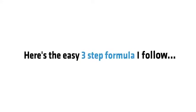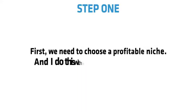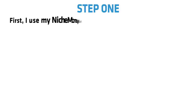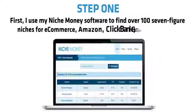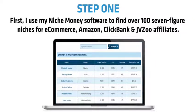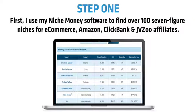Here's the easy three-step formula I follow. Step 1: we need to choose a profitable niche, and I do this with two free traffic softwares. I use my Niche Money software to find over 10 seven-figure niches for e-commerce, Amazon, ClickBank, and JVZoo affiliates.